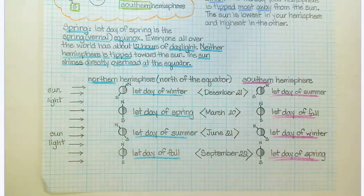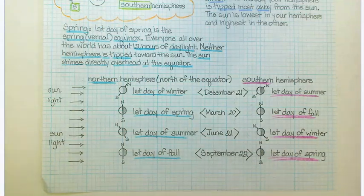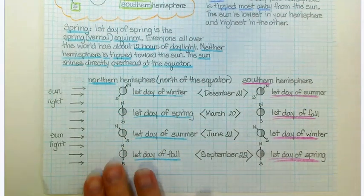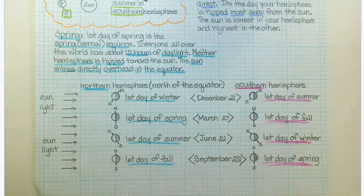All right, this is the last little bit for your reporting category three. Those are your yellow papers. This one is 8.7a about seasons.